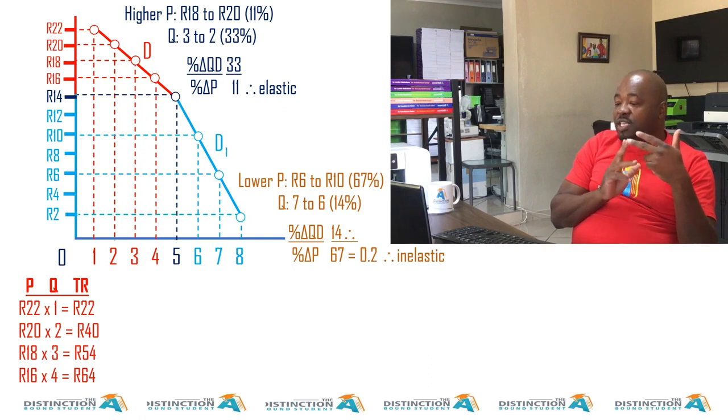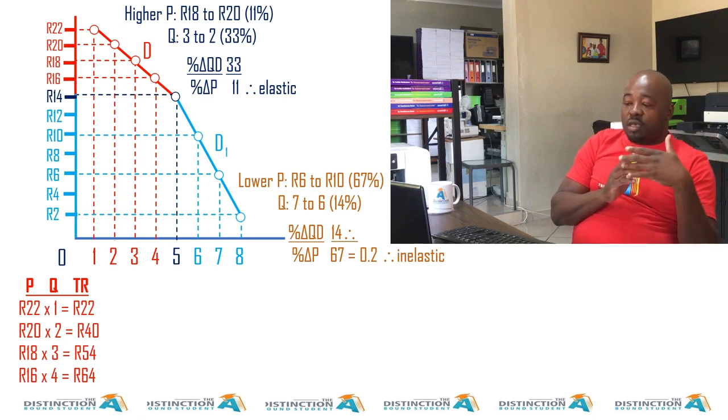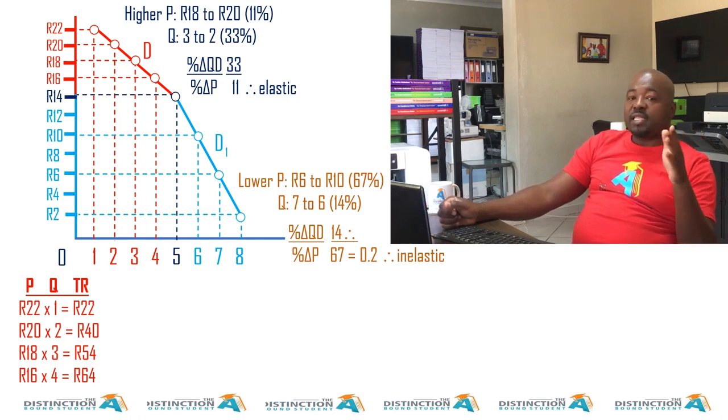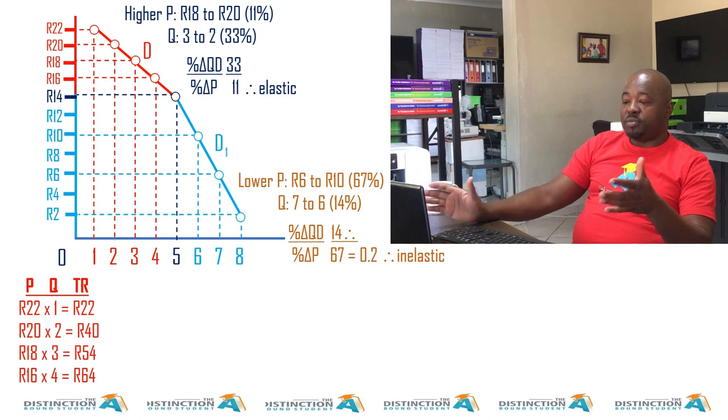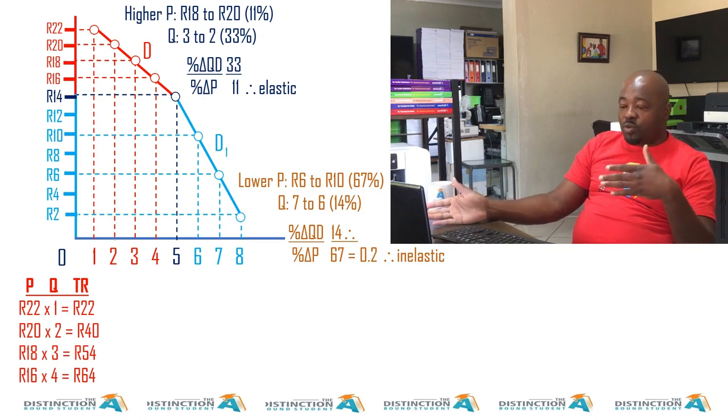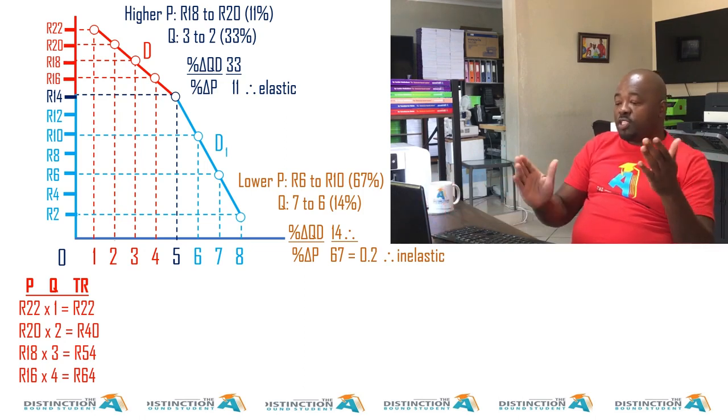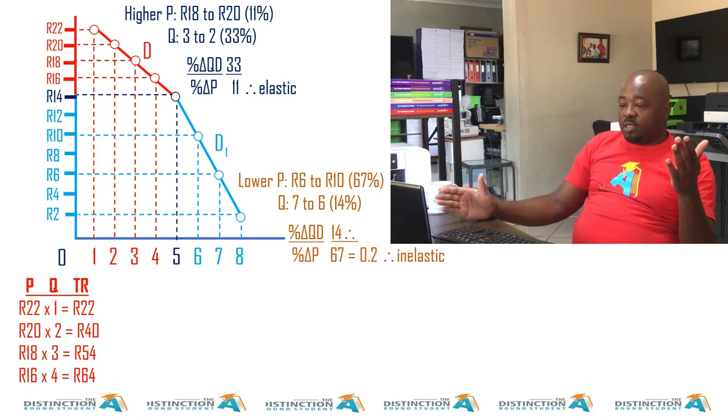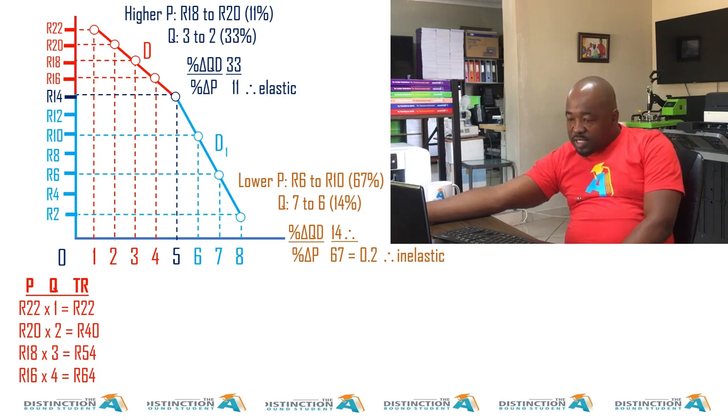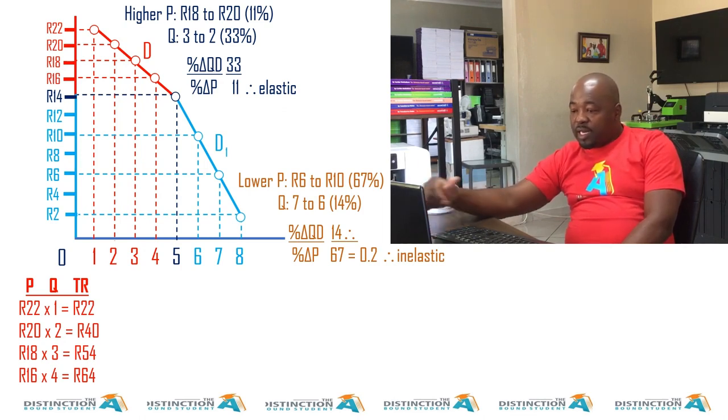So here the demand curves kink or they meet at 14 rands, which is five units. We want to see if we calculate, we want to see if that is the best price for this particular firm. So for us to find out what I did is I said price times quantity, I got total revenue for each of the eight outputs. So we start with one. So one times 22, that gives us 22, 40, 56, 64. So at this point in time, we see that quantity number six is better than any other quantity.